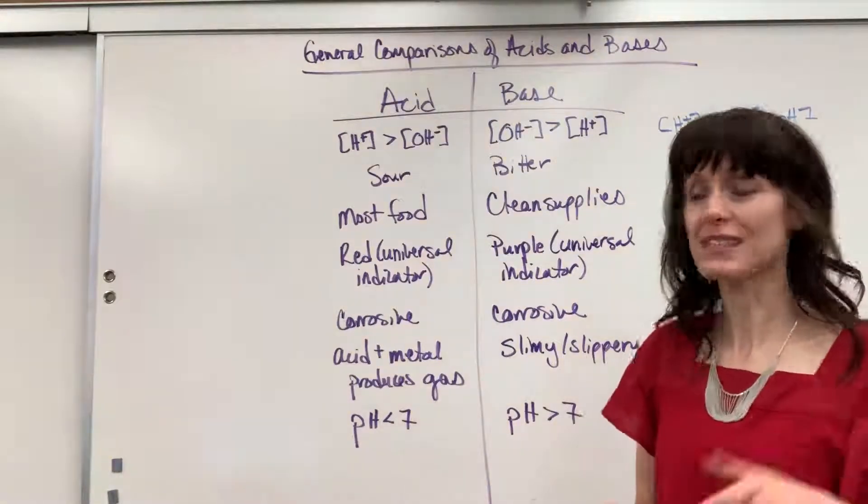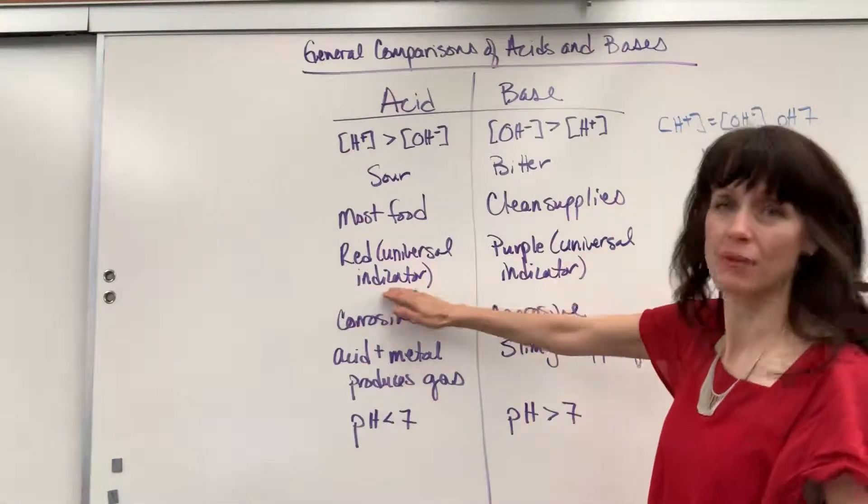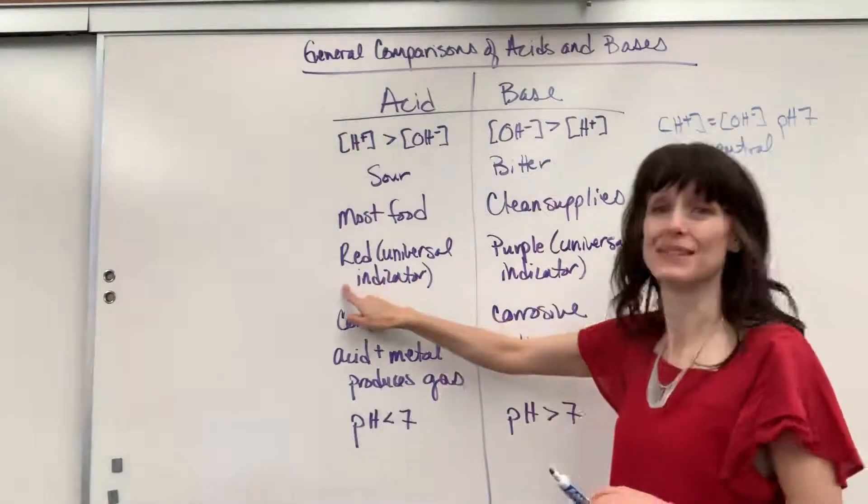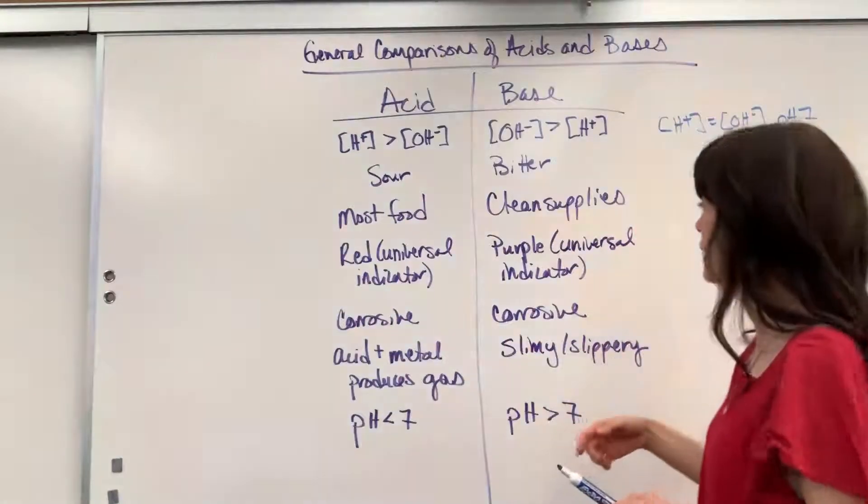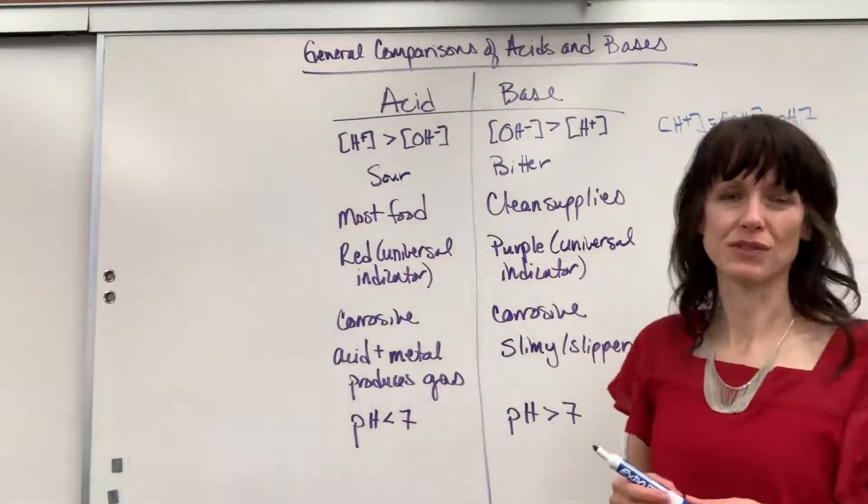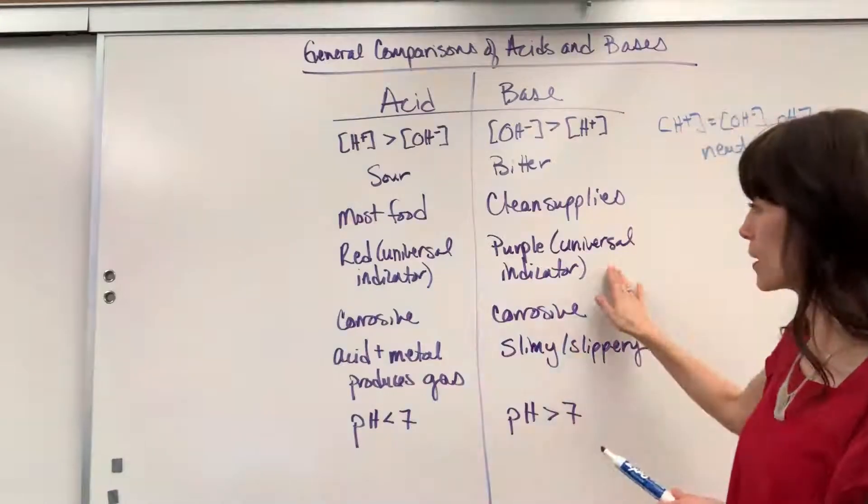Now if you're using a universal indicator, it's going to be red. Orange and yellow are also acidic, but red is the most acidic, down at that pH of one. Purple and blue, those are going to be the colors that you see from universal indicators for a base.